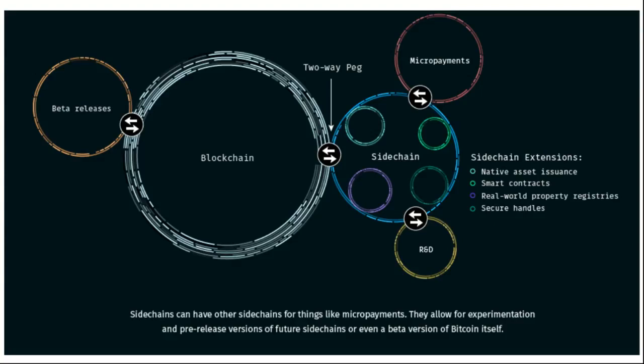This diagram allows us to see how complex and how expansive side chains could be to the main Bitcoin network. Essentially, side chains would allow applications that inherit the network benefits of security and exchangeability of the main Bitcoin network, while adding essentially any type of functionality that you can technically implement and integrate with the main Bitcoin blockchain.